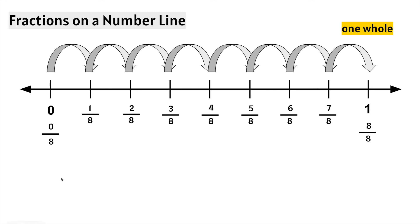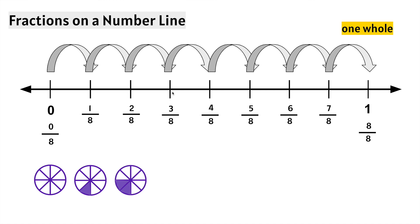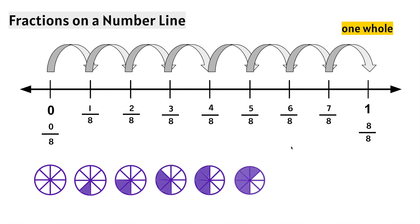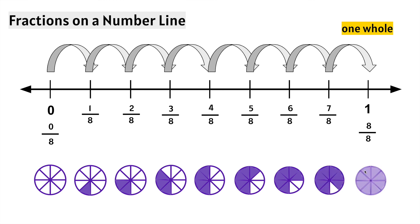Another way to think of it: 0 eighths, 1 eighth, 2 eighths, 3 eighths, 4 eighths, 5 eighths, 6 eighths, 7 eighths, and 8 eighths makes 1 whole, or 1.